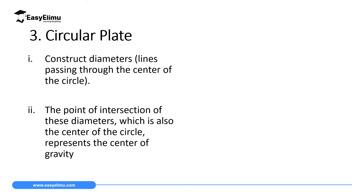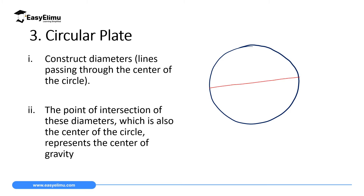The third regular shape is a circular plate. To determine its center of gravity, construct a diameter through the center of the circular plate. Then construct another diameter through the center. You can construct as many diameters as possible; all of them will pass through this center. That center point is the center of gravity, and if you balance it at the tip of a pencil it will balance out.